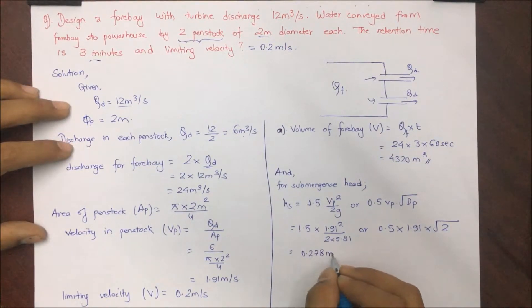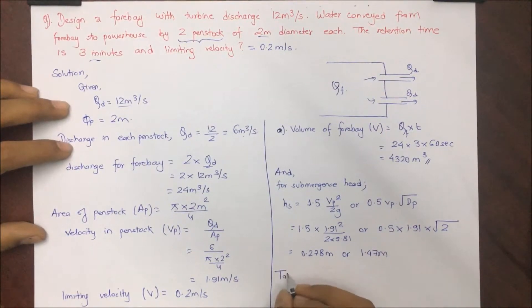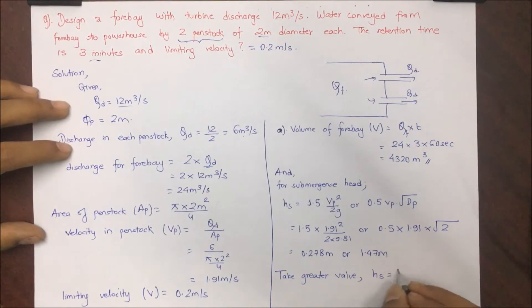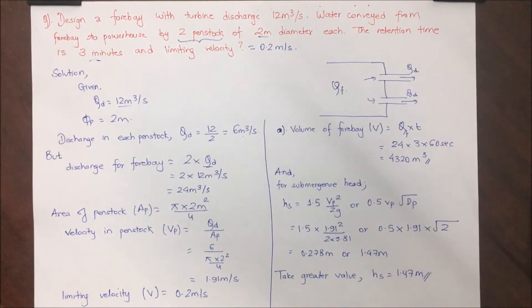Now Hs is calculated as 0.278 meter or 1.47 meter. Taking the greater value, we take this as 1.47 meter.